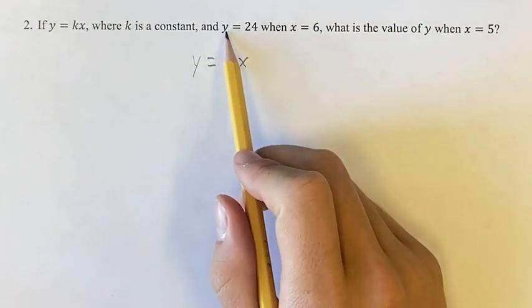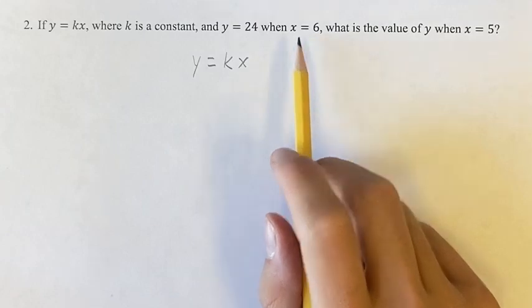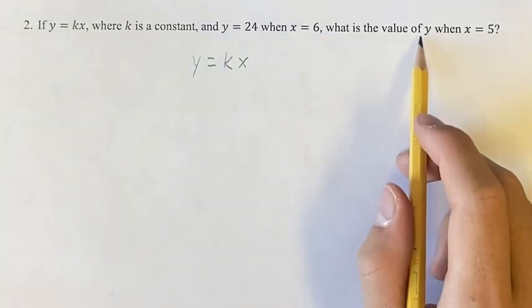We're told that given that y is equal to 24 when x is equal to 6, we need to find the value of y when x is equal to 5.